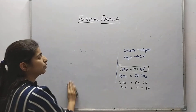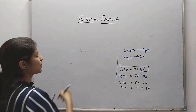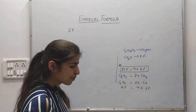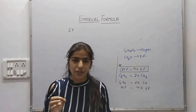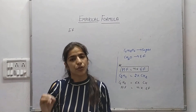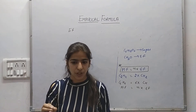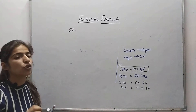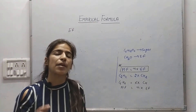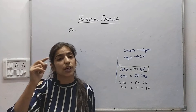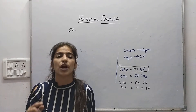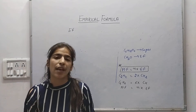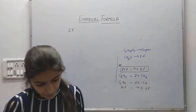To calculate the empirical formula, first of all you should know that the percentage composition of elements will be given. The composition given for all elements in the formula should total 100%. First check that the percentages add up to 100. Let's take an example and discuss it.